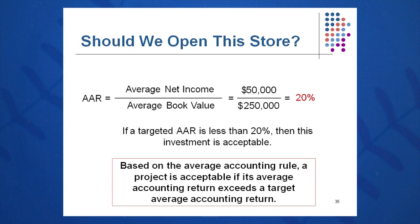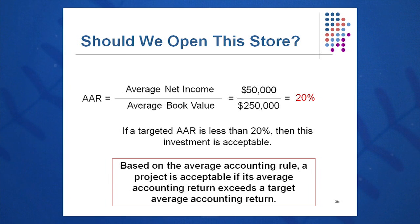Should we open this store? AAR equals average net income divided by average book value: $50,000 ÷ $250,000 = 20%. You still need a target from the CFO. If the target AAR is less than 20%, you accept the project. If the target AAR is higher than 20%, this project gets scrapped.